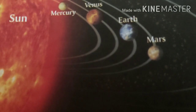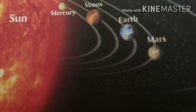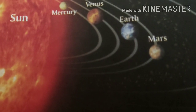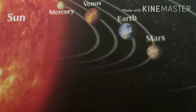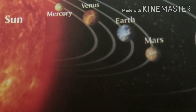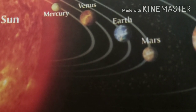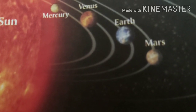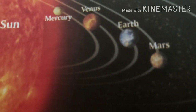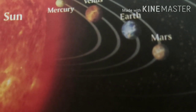The distance between the Sun and the Earth is about 150 million kilometers. One million means 10 lakh in the Indian system. Light from the Sun takes approximately eight minutes to reach the Earth.